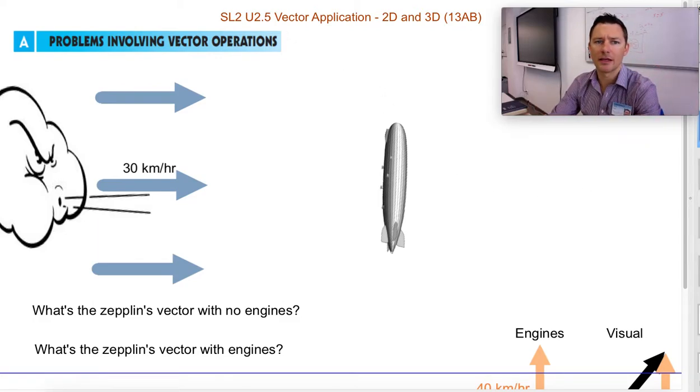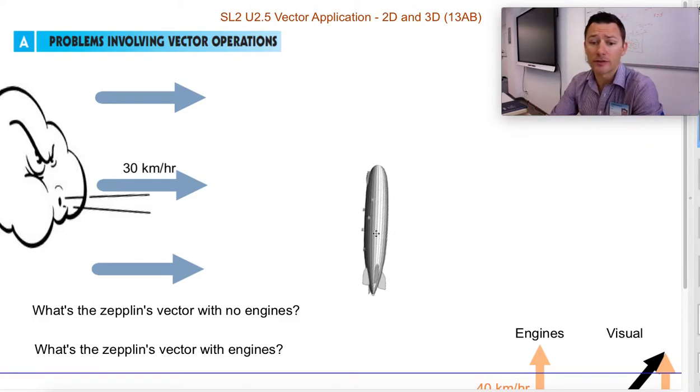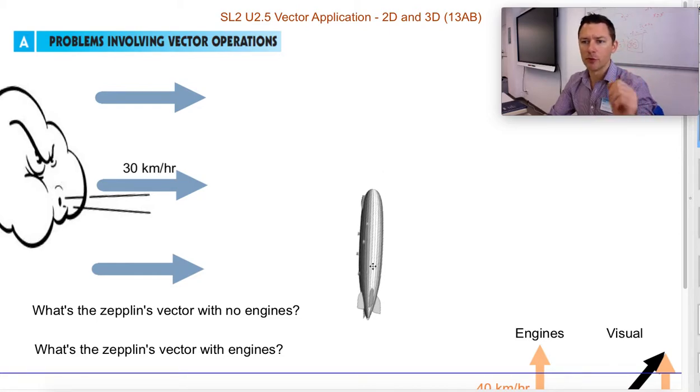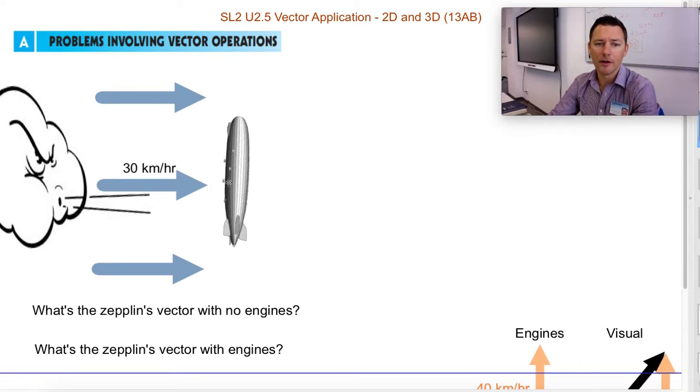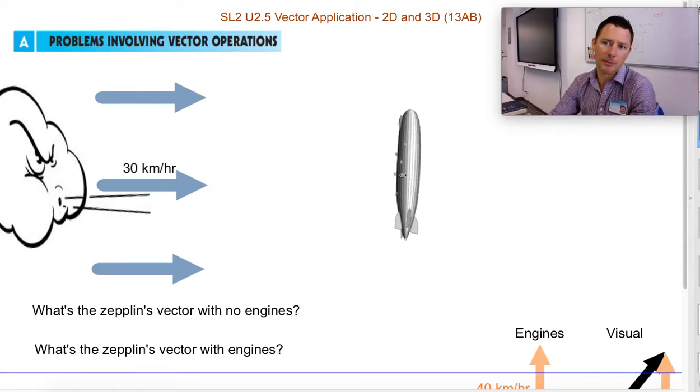One of the things that they use vectors a lot for, and actually I used in sailing, is an object moving under its own power through current or through a moving fluid. So if your Zeppelin, your airship, is just sitting there and the wind's moving at 30 kilometers per hour, the ship should drift at 30 kilometers per hour if there's no engines.